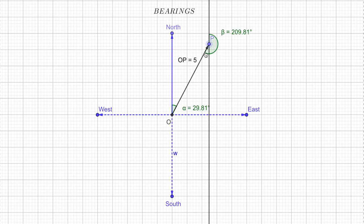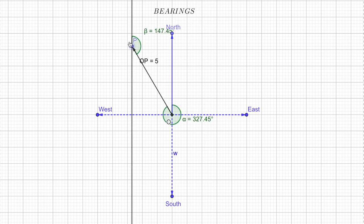So you can see it as I'm moving the point P, the bearing of O with respect to P also changes. So here if you see bearing of P with respect to O is 327, but bearing of O with respect to P is 147. Can you see that?